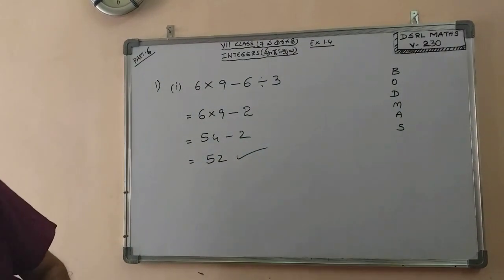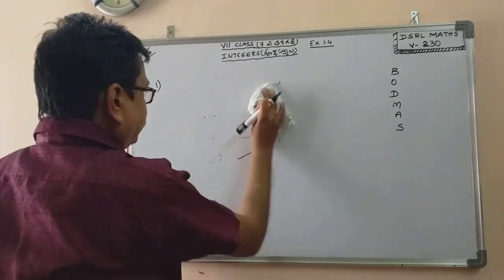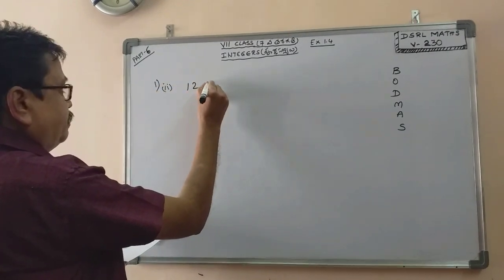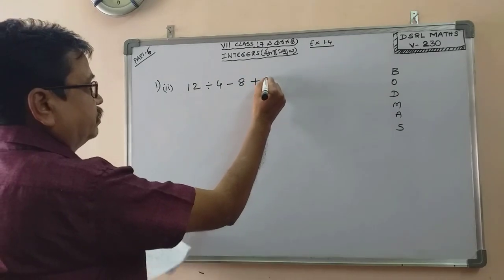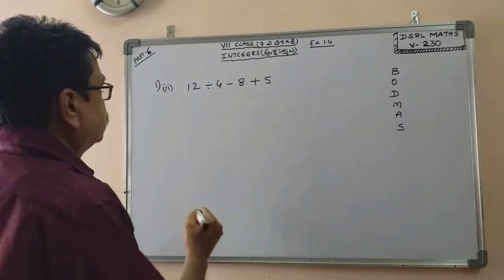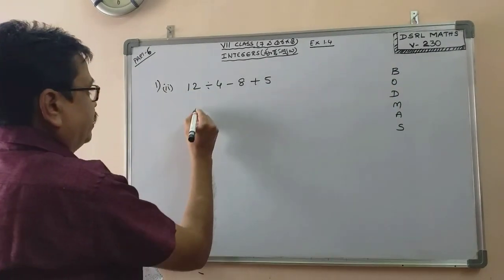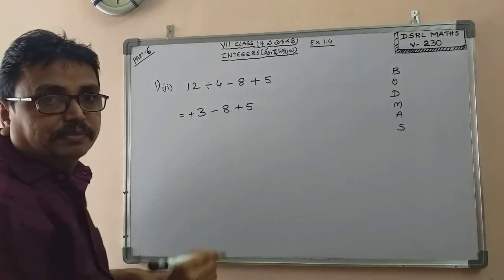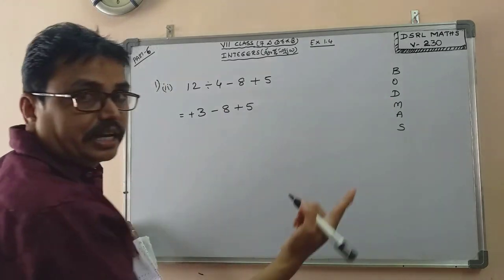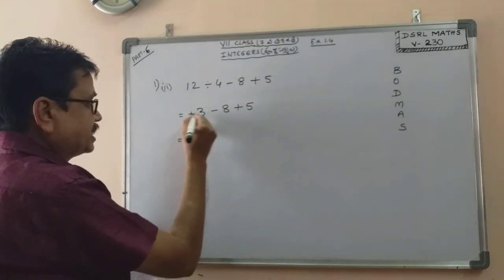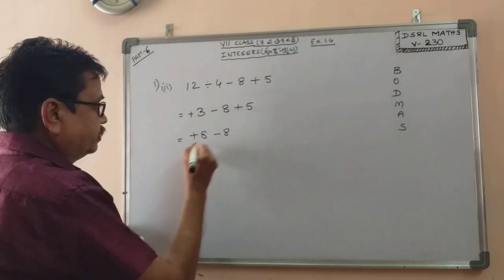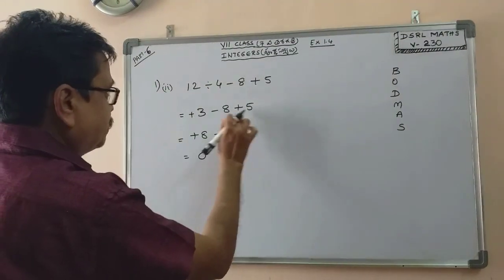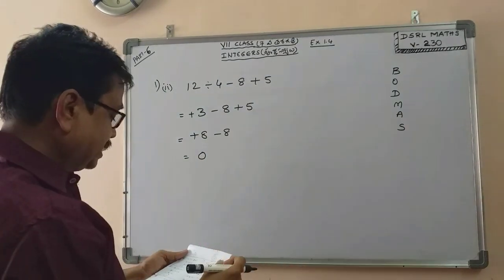Second example: 12 divided by 4 minus 8 plus 5. This is a simplification. First, division: 12 divided by 4 is 3, minus 8 plus 5. Then addition: 3 plus 5 is 8, minus 8 is 0. The answer is 0.